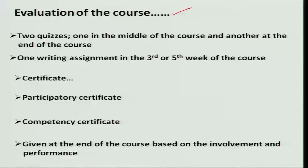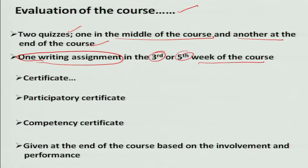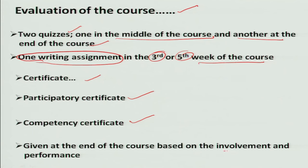This is an 8-week course with a defined scheme of evaluation. The course is evaluated through two quizzes — one in the middle of the course, around the fourth week, and another at the end. Apart from the quizzes, there will be one writing assignment around the third or fifth week. At the end, two types of certificates are provided: a participatory certificate for students who complete the course, and a competency certificate for those who pass the quizzes and the writing assignment. These certificates are awarded based on involvement and performance.